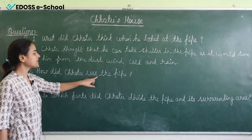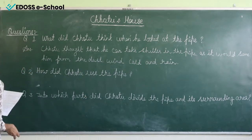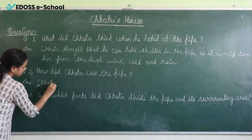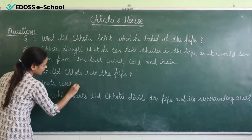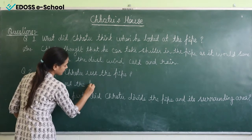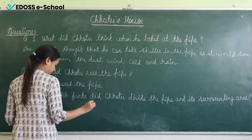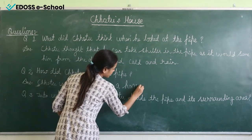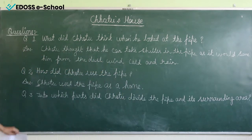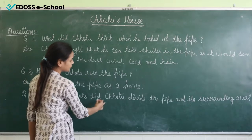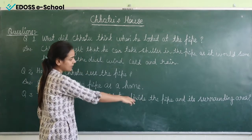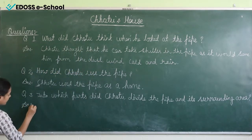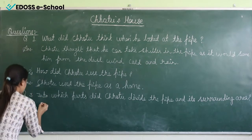Chotu used the pipe as a home. In the third question: Into which parts did Chotu divide the pipe and its surrounding areas? He divided it into a sleeping area.